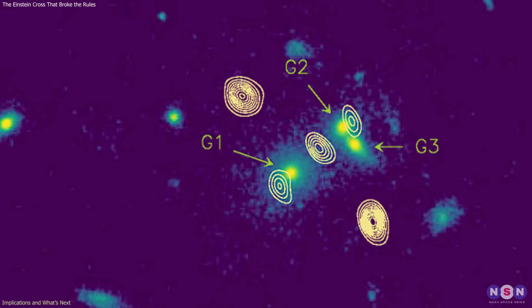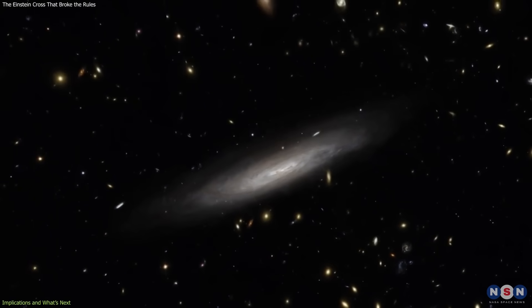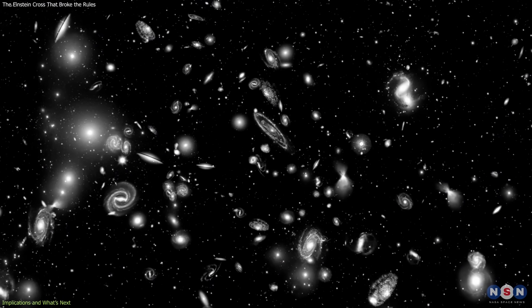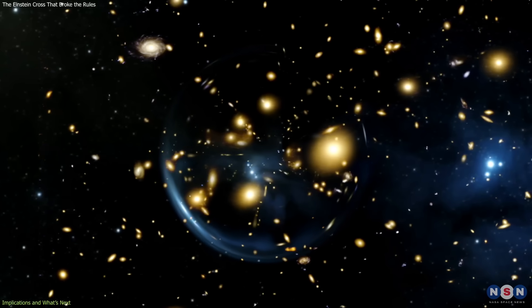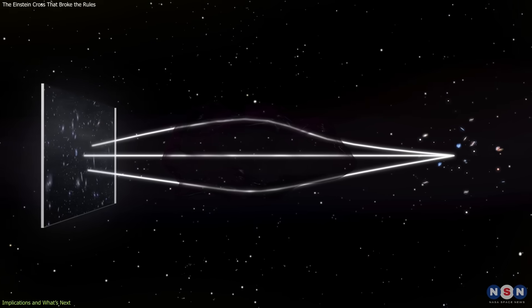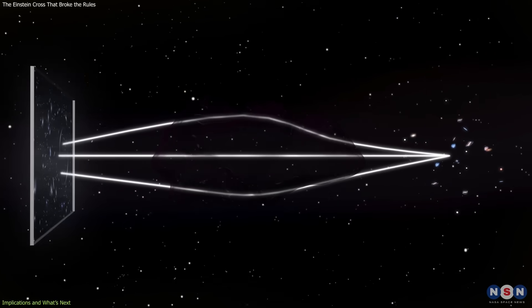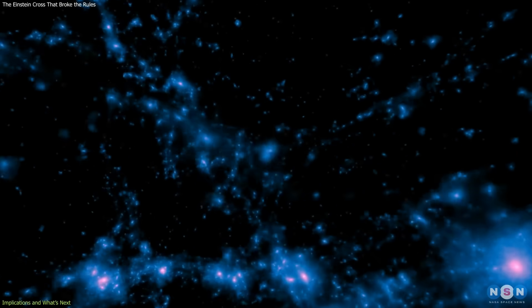If similar cases are found, they could collectively map it on scales ranging from individual galaxies to groups and clusters. The broader implication is that gravitational lensing is not only a method to study the distant universe, but also a tool to investigate the invisible structures shaping it. Each new anomaly adds to the evidence that their halos are central to cosmic evolution.